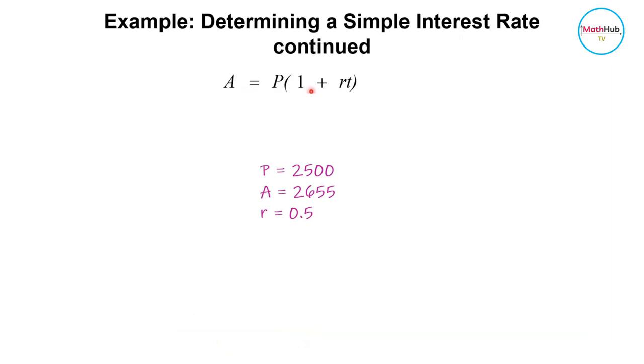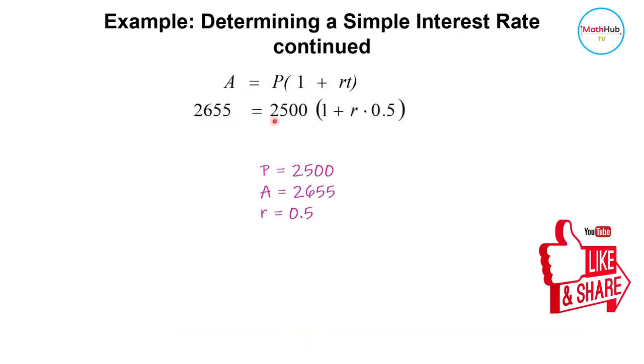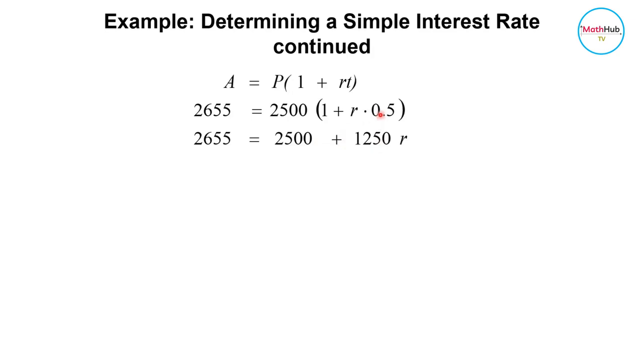Now substituting into the formula, we have 2,655 equals 2,500 times 1 plus R times 0.5. And then distribute 2,500 to each term here. Therefore, you have 2,500 plus 1,250R because 0.5 times 2,500 is 1,250. Transpose to the other side, 2,655 minus 2,500. That's how you get 155.